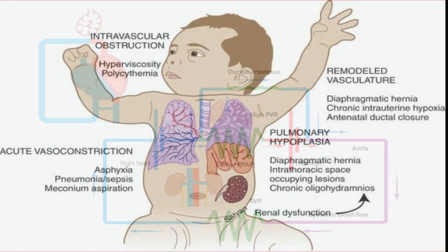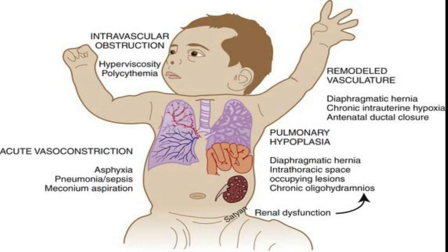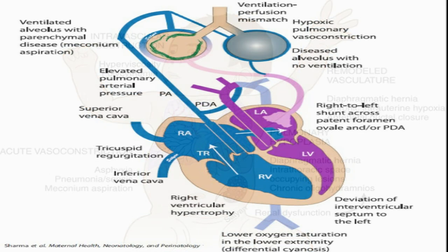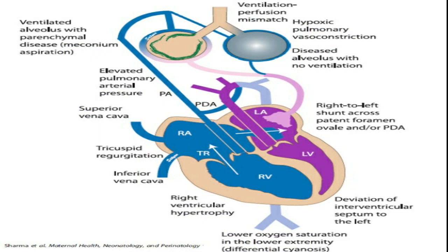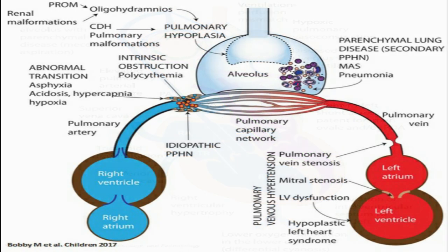In the term infant, persistent pulmonary hypertension is characterized by the failure of the physiological postnatal decrease in pulmonary vascular resistance, resulting in impaired oxygenation, right ventricular failure, and pulmonary to systemic shunting. The pulmonary vasculature is either maladapted, maldeveloped, or underdeveloped.